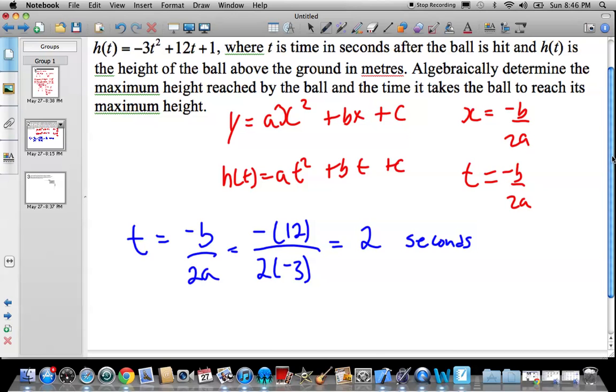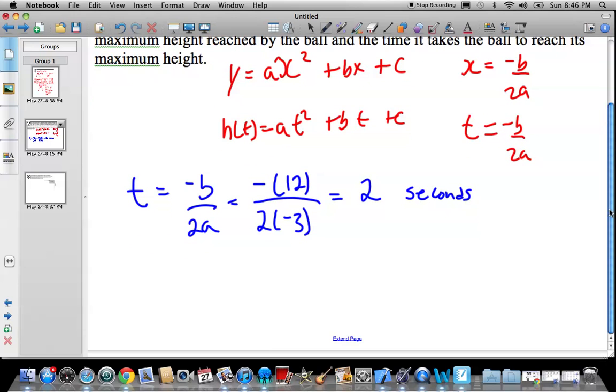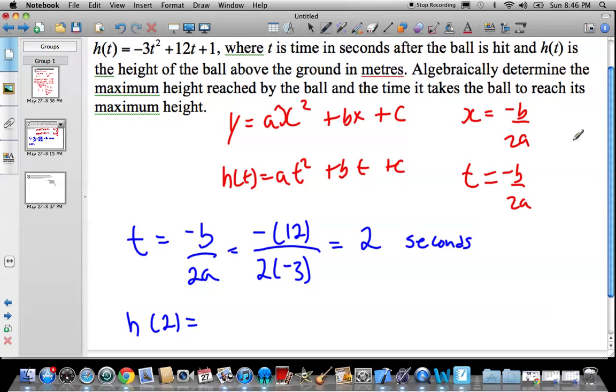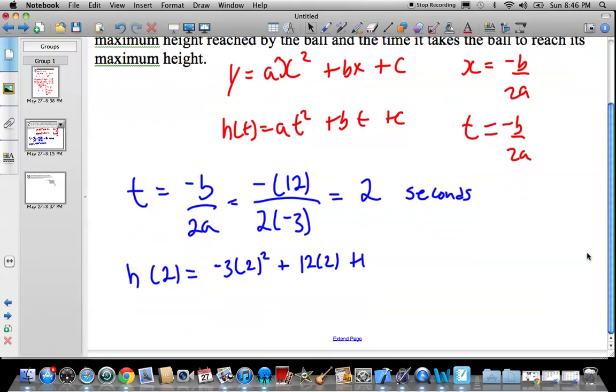So now what we need to do is figure out exactly the maximum height. So H of T. So H of 2 is what we're finding. So we're going to put in T is equal to 2. And then we have negative 3 times 2 squared plus 12 times 2 plus 1. So don't forget BEDMAS. We do exponents first. And we don't go negative 3 times 2 then squared. We go 2 squared which is 4. So we get negative 12 plus 24 plus 1. Or we're going to have, when we do the math on this guy, we get 13. And that's meters.